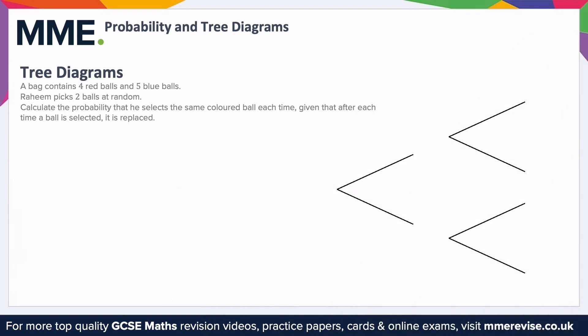Probability trees are similar to frequency trees, but instead we put the probabilities on the branches and the events at the end of each branch. In this case, we've got a bag that contains four red balls and five blue balls. Rahim picks two balls at random; calculate the probability that he selects the same coloured ball each time, given that each time a ball is selected, it is replaced.